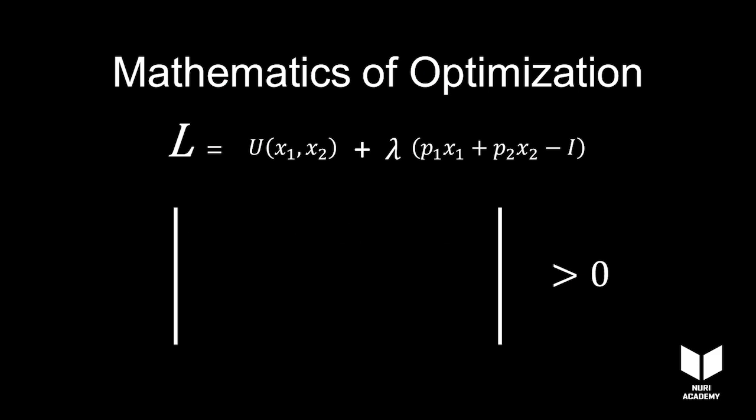To construct this matrix, first differentiate the Lagrangian with respect to lambda and fill the first row with it. Then differentiate the Lagrangian with respect to x1 and put it in the second row entries. And the derivative with respect to x2 fills the third row.